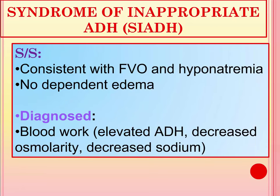Signs and symptoms consistent with fluid volume overload and hyponatremia include increased blood pressure, weight gain, elevated heart rate, and possibly trouble breathing. With hyponatremia, you could see neurological changes. Generally, there is not a lot of dependent edema in these patients, as the retention is of free water and not sodium. Watch for confusion, lethargy, and hostility — anything indicating a sodium level decreasing below 135. Serious CNS effects can manifest when sodium drops below around 115.